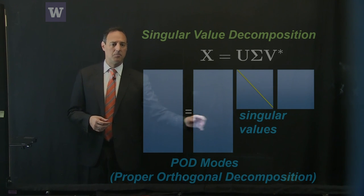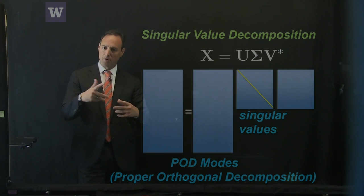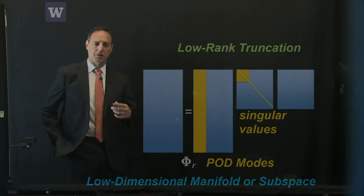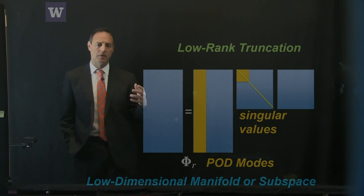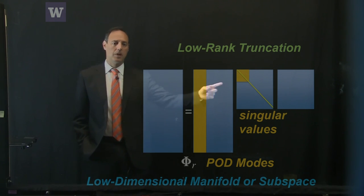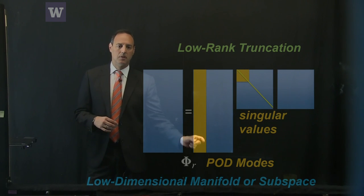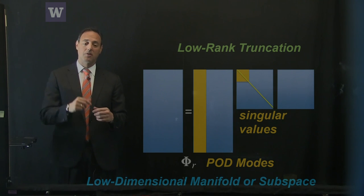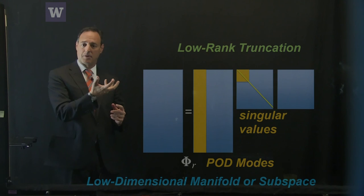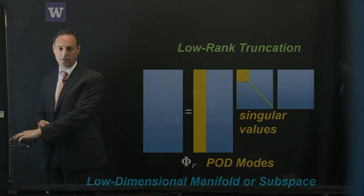These modes in U are called POD modes, or proper orthogonal decomposition modes — a set of low-rank orthogonal structures to project or embed your dynamics in. Low-rank truncation is the heart of this: if you see low-dimensional structure in your simulation, which is typical for large-scale PDEs, you truncate the singular values, keep R modes — the first R columns of U, which we call phi of R — and these POD modes represent where we project our nonlinear dynamics.